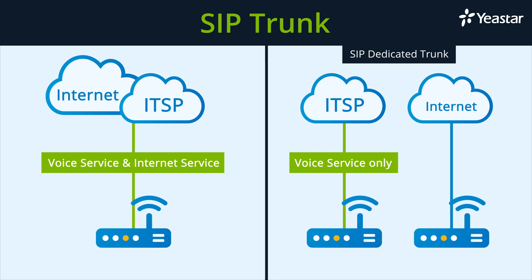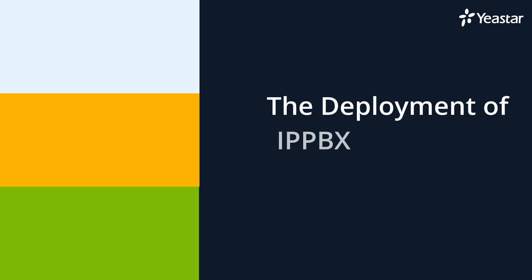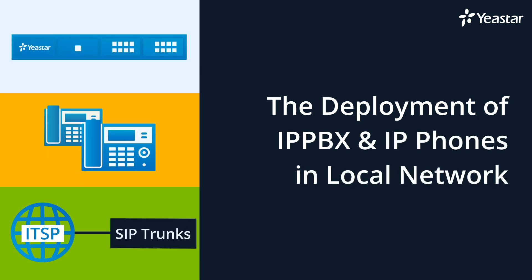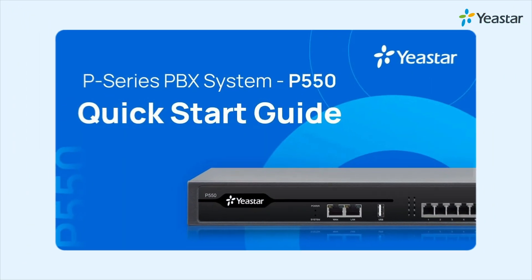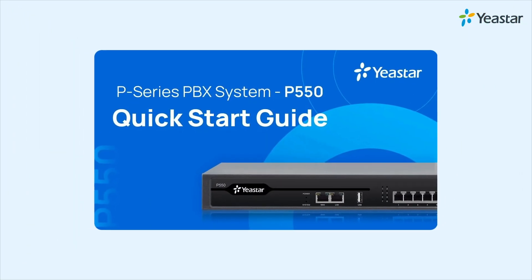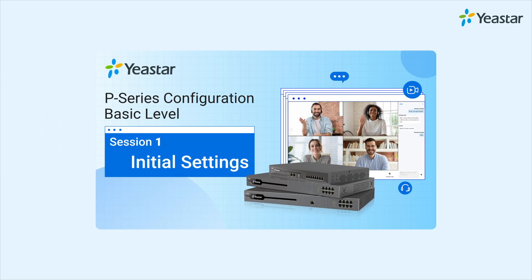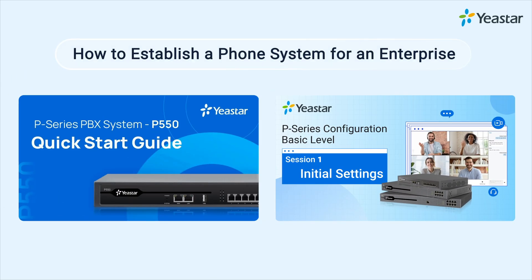That was all for the SIP dedicated trunk configuration. You've just learned how to deploy an IP PBX together with an IP phone and a SIP trunk in the LAN. Next, we suggest you watch our P-Series PBX Quick Start Guide and Basic Configuration video tutorial to learn how to establish a phone system for an enterprise. Hope you enjoyed this video — don't forget to subscribe. Get more details? Check our Document Center. I'll catch you guys in the next one.